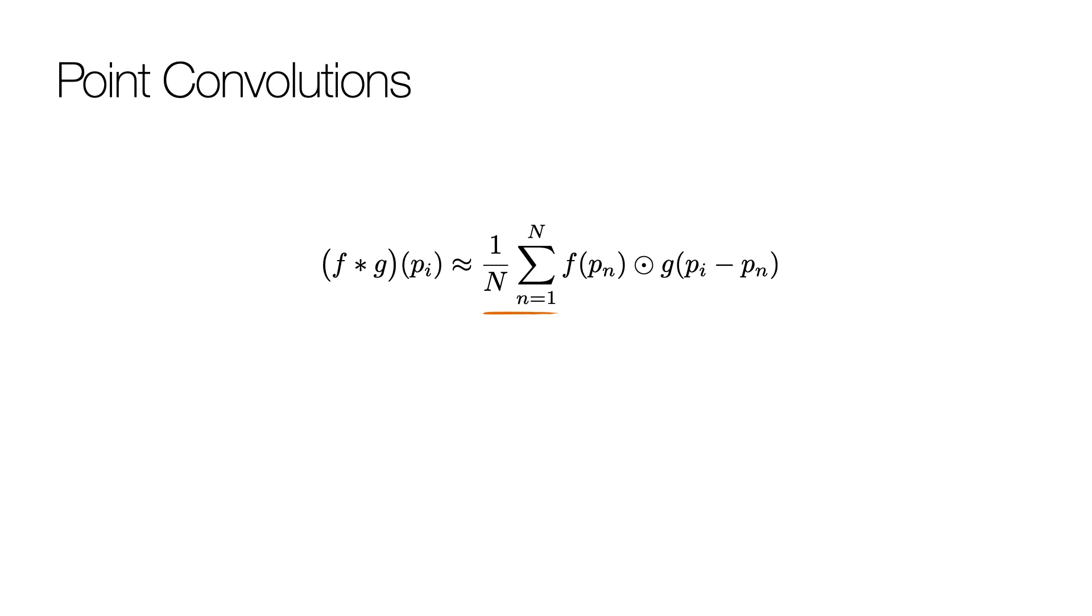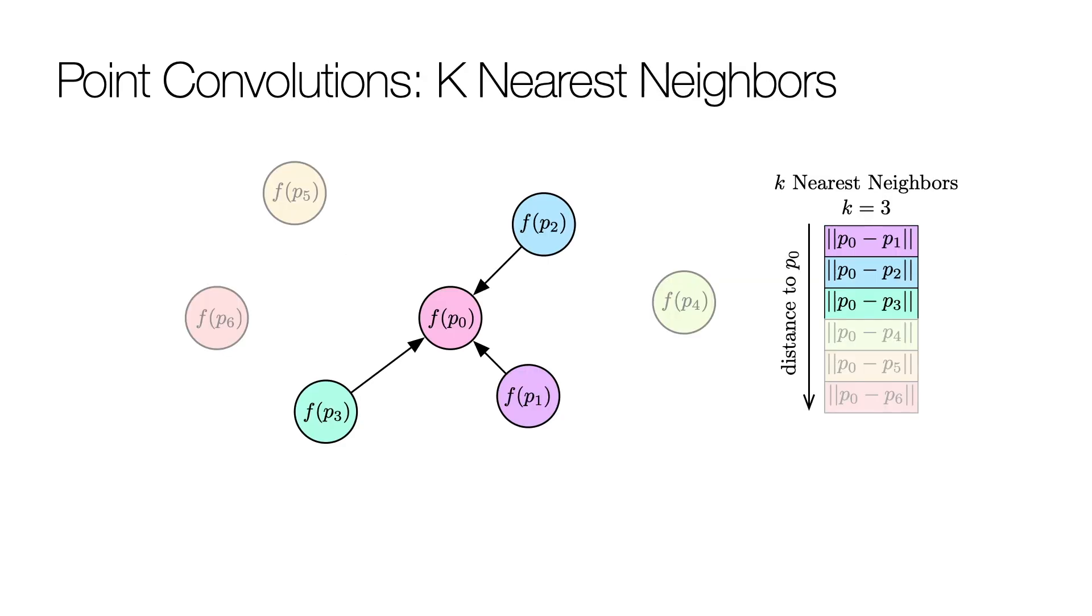Similar to 2D image convolutions, our kernels are localized. Specifically, for each point we define a local point neighborhood which serves as a finite kernel support. This local point neighborhood can be computed using k nearest neighbors.